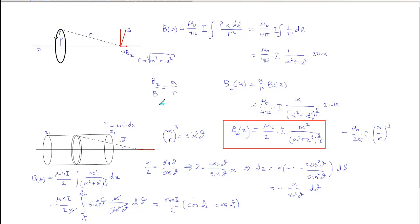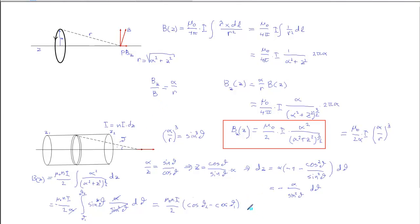Now let's check whether this result is correct for an infinitely long solenoid. So what do we have to do? For the z coordinate, we have to integrate from minus infinity to infinity. For the theta coordinates, we have to integrate.